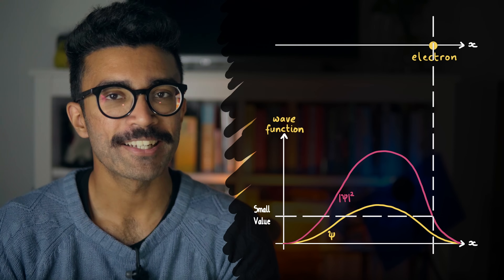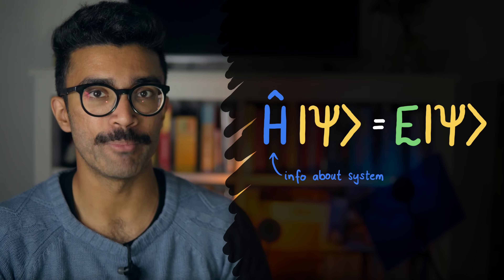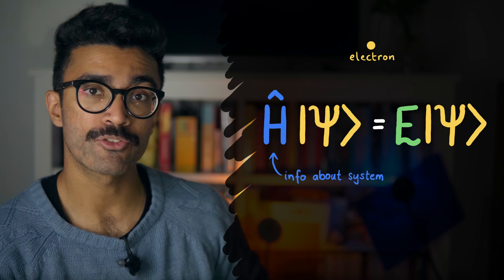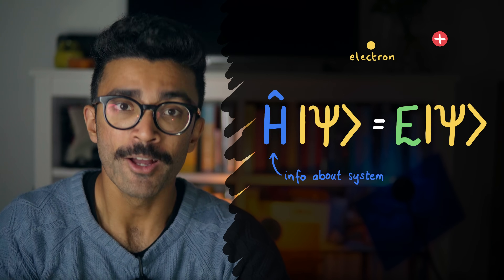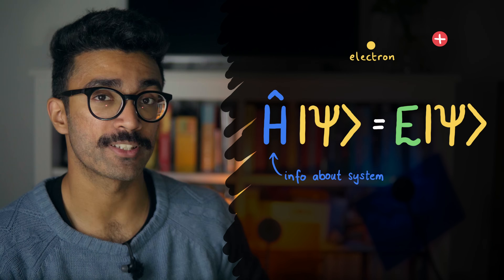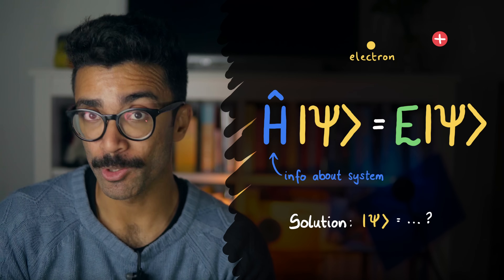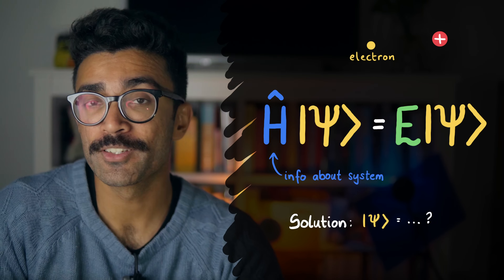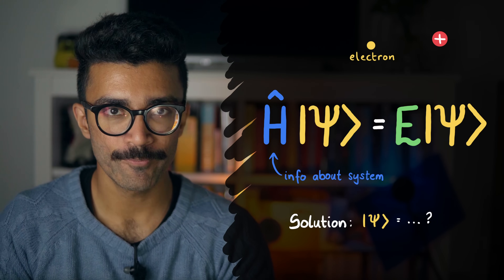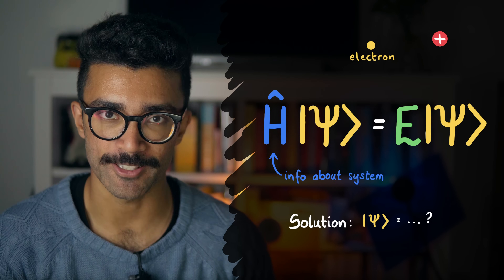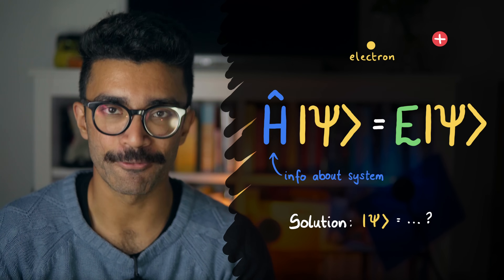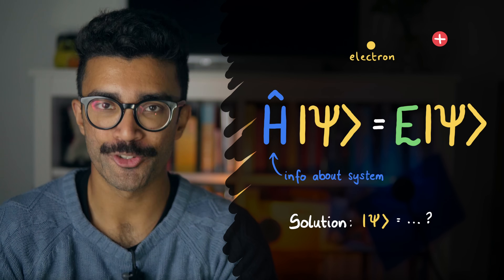Coming back to the Schrödinger equation, we can plug in information about the system — such as the fact that it's an electron and what surroundings our electron interacts with — in order to tell us what the wave function should look like in the first place. That's what it means to solve the Schrödinger equation: you plug in terms that describe the physical system you're studying and then solve to find psi, the wave function. In other words, this equation takes what system we're studying and tells us the probabilities of different experimental results, such as the likelihood of finding the electron in different regions of space.